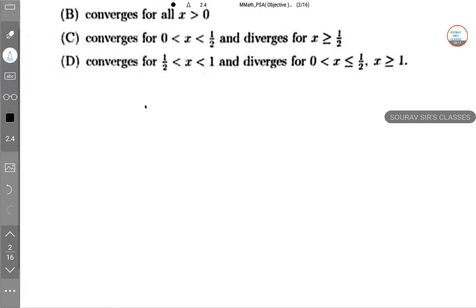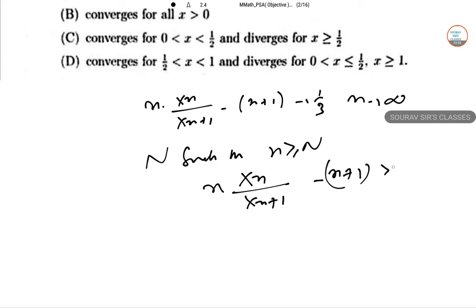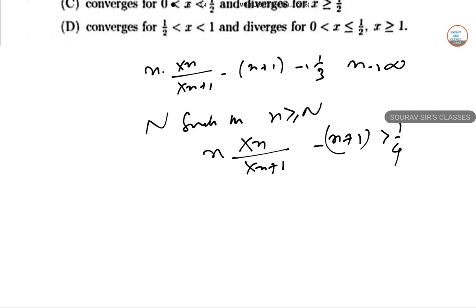At x equals 1, we have n·xn·x(n+1) minus (n+1) tends to 1/3 as n tends to infinity. Hence there exists N such that for n greater than or equal to N, we have n·xn·x(n+1) minus (n+1) greater than 1/4, which means x(n+1) is greater than 1/4·xn plus 1.